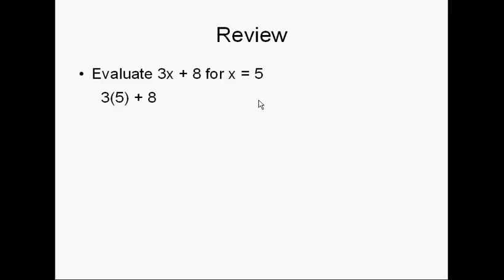So if we do that, we get 3 times 5 plus 8. 3 times 5 is 15, so 15 plus 8 is 23. And that all started by substitution where 5 was put in for that x because they were the same thing. Let's see how that works in terms of systems of equations.